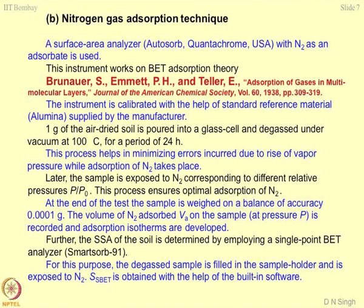The sample is degassed at 100 degrees centigrade for a period of 24 hours. Degassing is nothing but removing all the vapours associated with the sample, so that the nitrogen gas gets a better chance to get adsorbed on the surface of the particles. This process helps in minimizing errors due to rise of vapour pressure while adsorption of nitrogen takes place.